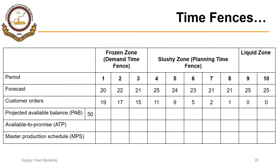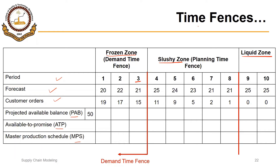We have an MPS grid with periods, forecast, customer orders, PAB, ATP, and MPS. There are three zones: frozen zone, slushy zone, and liquid zone. The frozen zone is determined by the demand time fence — in this case the demand time fence is at the end of period three, so periods up to and including period three constitute the frozen zone. The planning time fence is at the end of period eight, and periods four to eight between the demand time fence and planning time fence constitute the slushy zone.